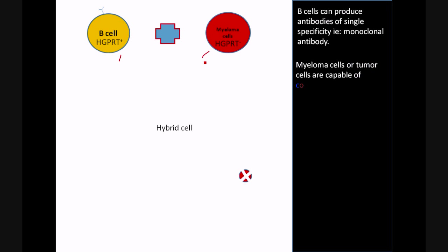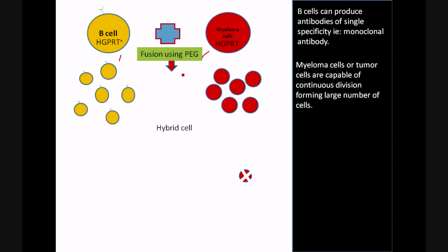So we are fusing these two cells using polyethylene glycol, the fusogen, and the majority of the cells will be unfused. So only a few number of cells will be fused. We will be having a hybrid cell. We need to select this hybrid cell from a mass of all the other unfused cells.